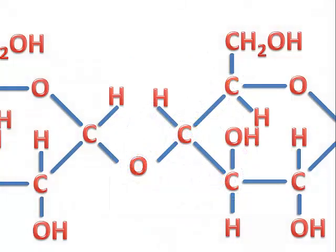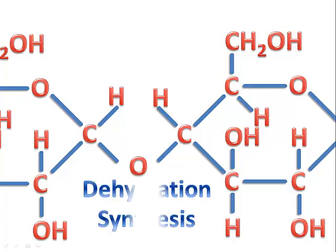If we take a look at what the stick figure would look like, it's more like this. This process of removing a water in order to form a covalent bond to put monomers together to make a dimer, which we could do again and again and again in the process of making a polymer, is called dehydration synthesis.